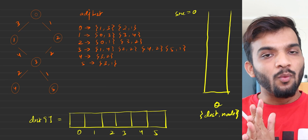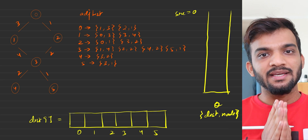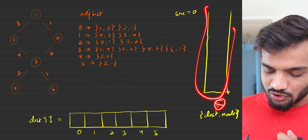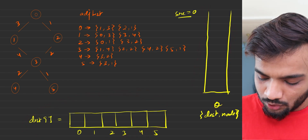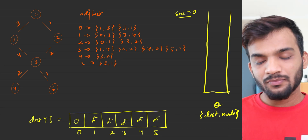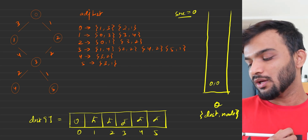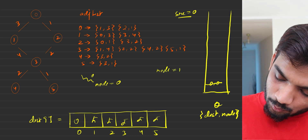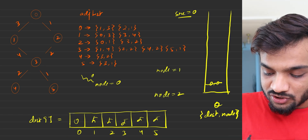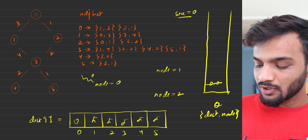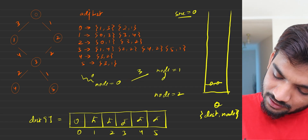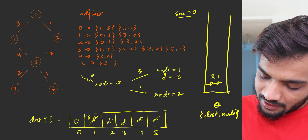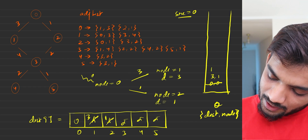Starting with the first question — why a priority queue or set when a regular queue also gives the answer. Let's take a particular graph with its adjacency list and try the algorithm with a queue data structure and a distance array. Given source node zero, everything else is initialized as infinity. We put zero-comma-zero in the queue, take it out, and node zero can go to node one and node two. Going to node one takes distance three, so we update it to three and enqueue three-comma-one. Going to node two takes distance one, so we update and enqueue one-comma-two.